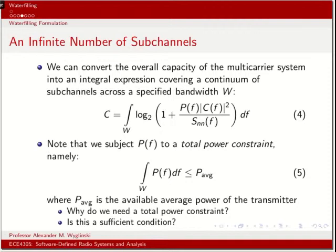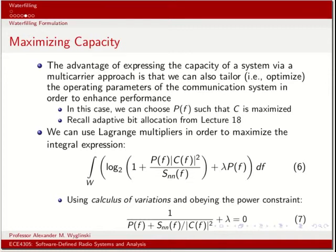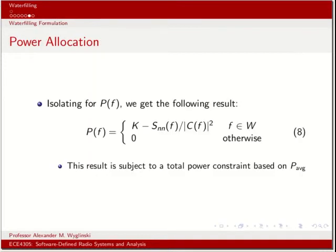An infinite number of sub-channels - now we go from summation across N sub-channels to an integral expression across a continuum of bandwidth W, and that's where we get equation 4. If we impose a total power constraint, because we want to avoid having an unlimited number of power - we want to avoid large concentrations of power in the spectrum, which is not really good for out-of-band emissions - we impose a total power constraint. How much total power can the transmission have? That's expressed in equation 5. What we do is we maximize, and we use Lagrange multipliers, which we see here in equation 6 with the lambda P(f).